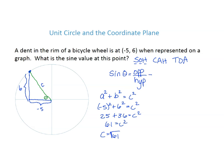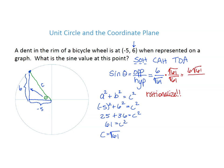So c equals the square root of 61. Now I'm almost there. Coming back up, the side opposite my angle is 6, and notice that's the y value of my point over the hypotenuse, which is square root of 61. If you needed a decimal approximation, you could get that here and be done. If it needs to be in radical form, we can't leave a radical in the denominator, so we multiply top and bottom by square root of 61. On top we'll have 6 root 61, on the bottom just 61 — that's the exact value.